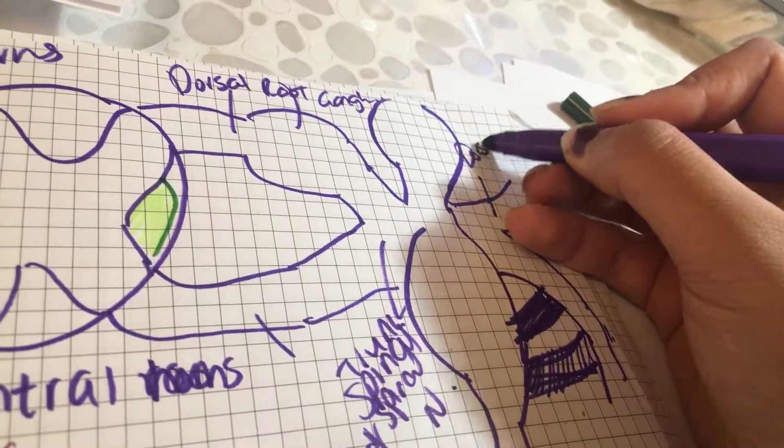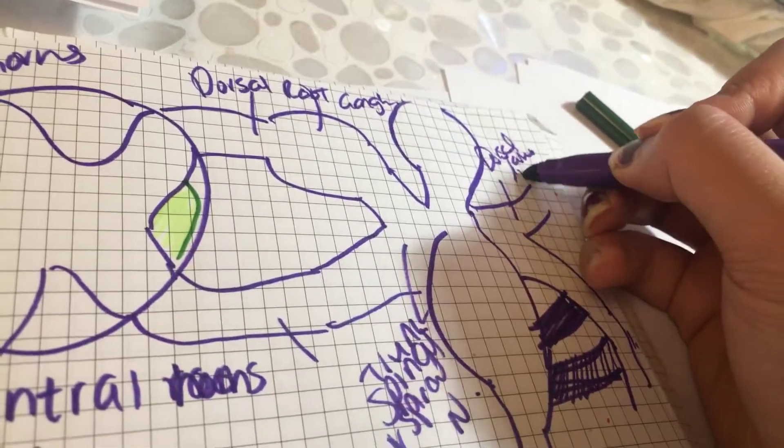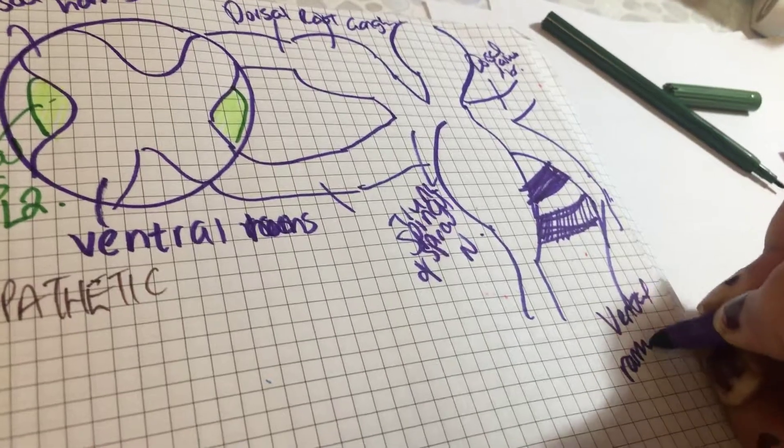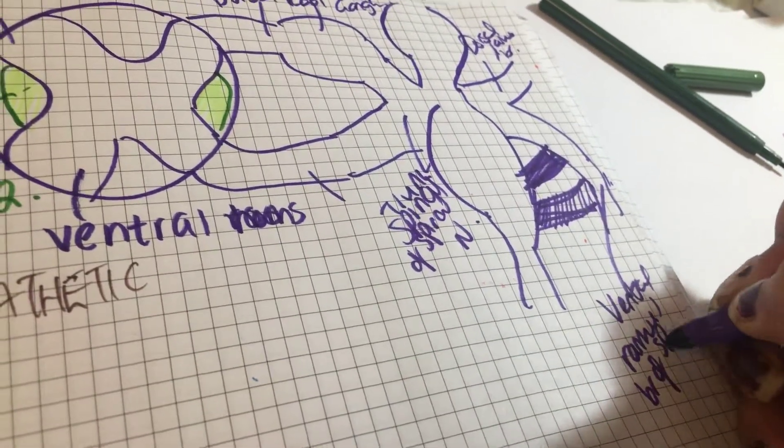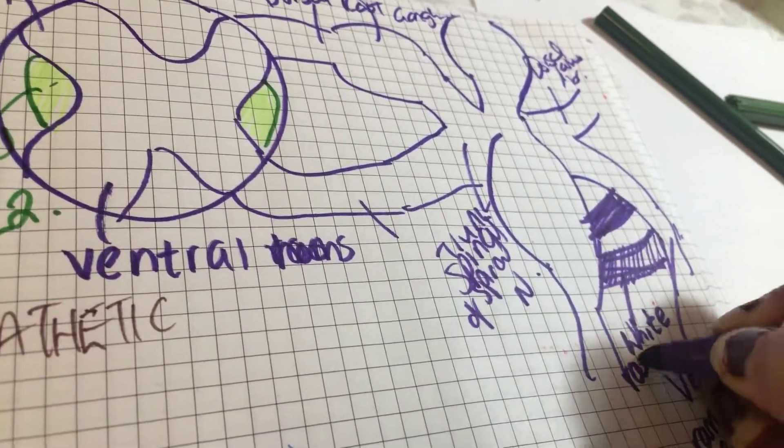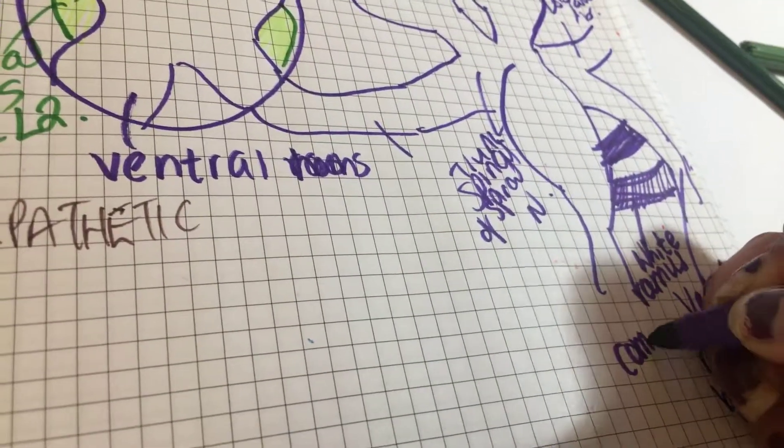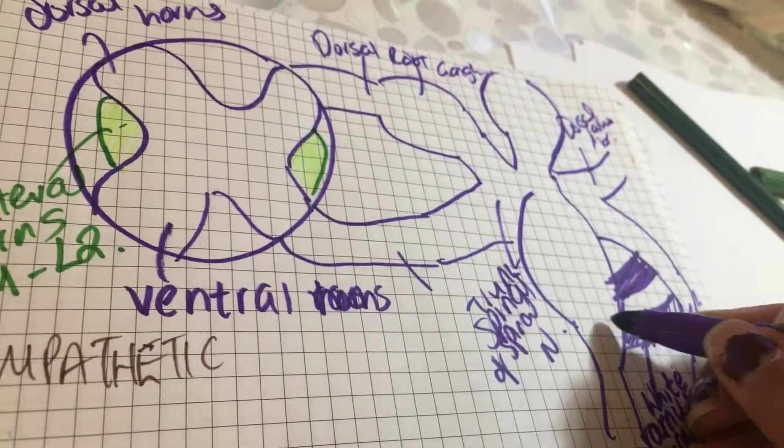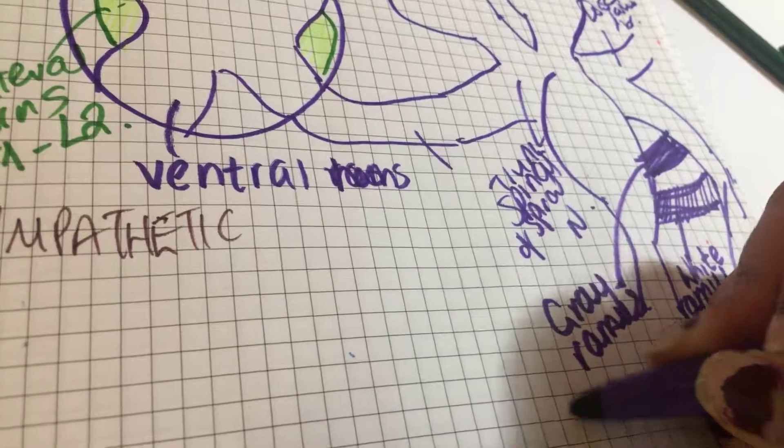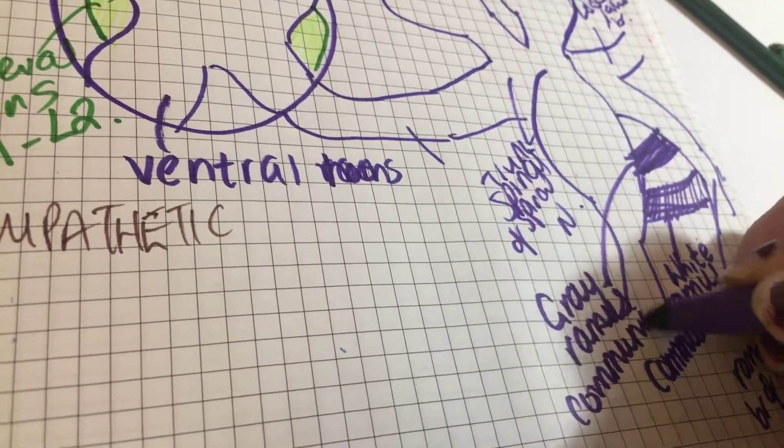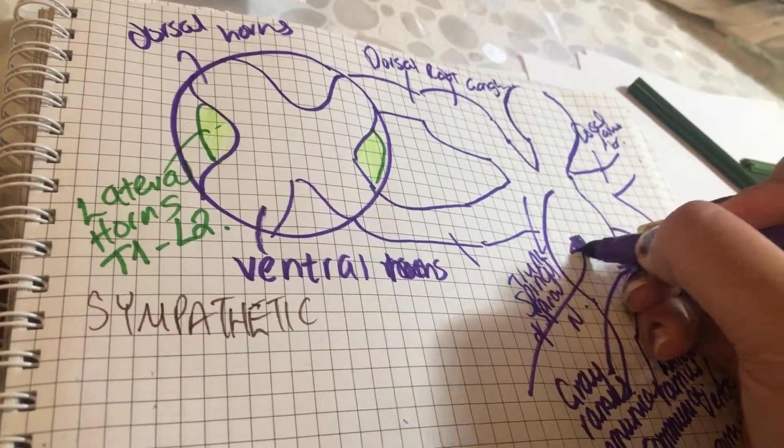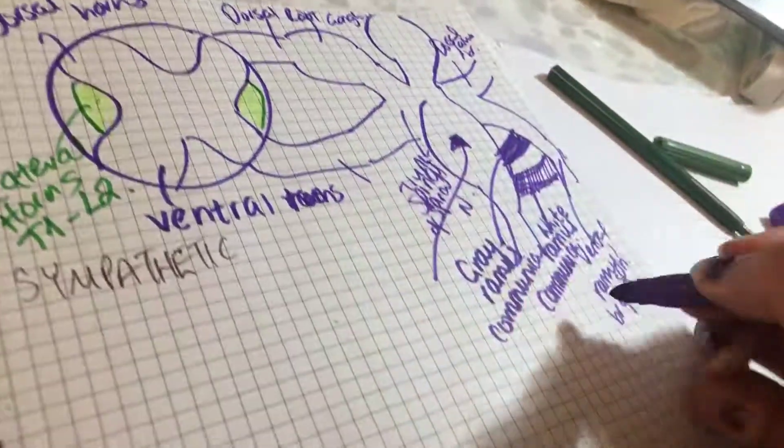Here would be your dorsal ramus or branch of spinal nerve, here would be your ventral ramus or branch of spinal nerve, and here would be your white ramus communicans, and here would be your grey ramus communicans. This is our sympathetic ganglion.